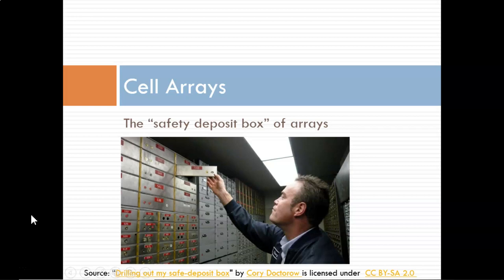I like to call cell arrays the safety deposit box of arrays. As seen in this picture, there is one wall of many boxes. Each individual box can hold something different from the other boxes, and to access those contents you need to unlock that specific box. So the entire wall would be called the cell array and each individual box is a cell.